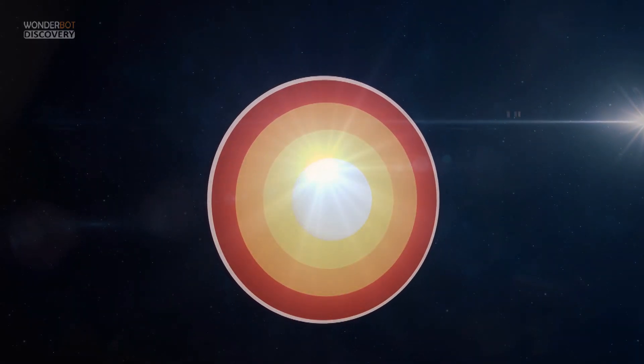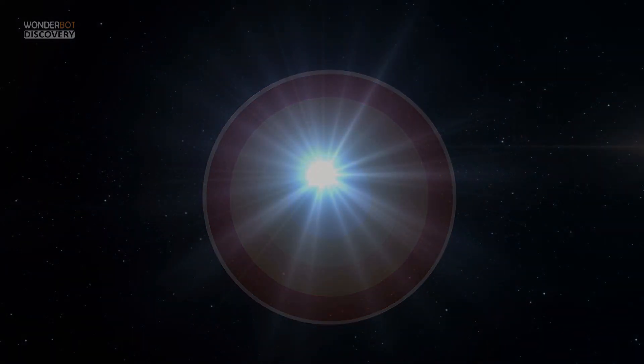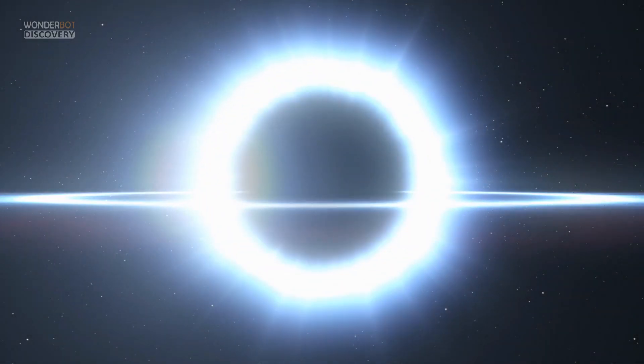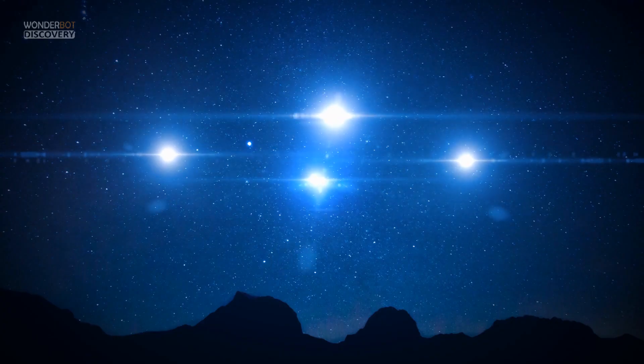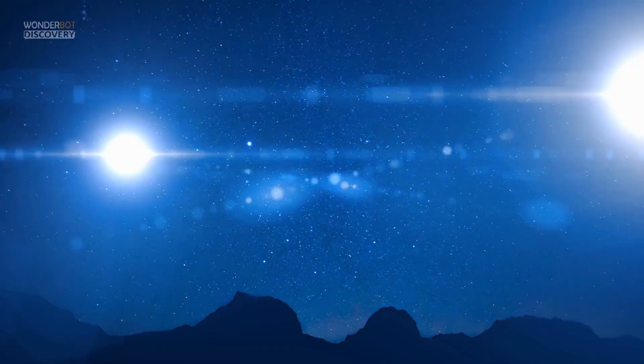When a massive star runs out of material in its core, the star will collapse under its own gravity and turn into a supernova. Betelgeuse, a reddish star that's one of the brightest in the night sky, has been noticeably fainting or getting dimmer.